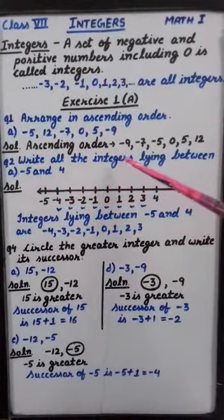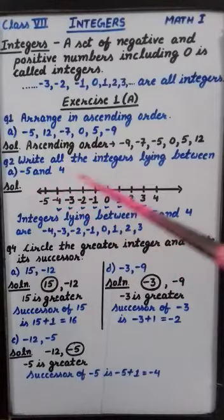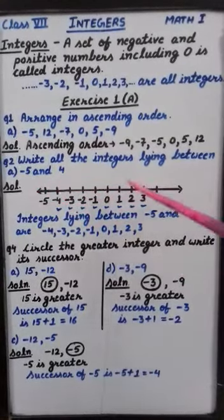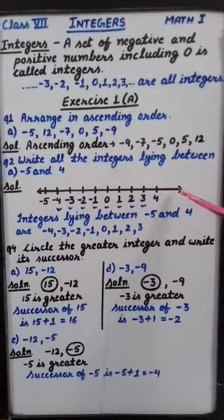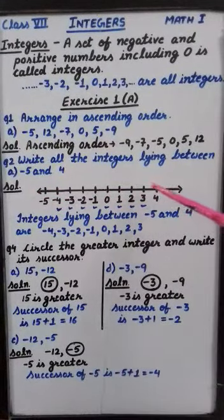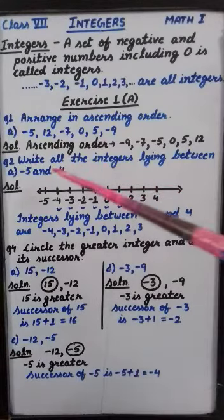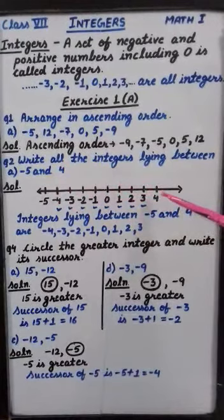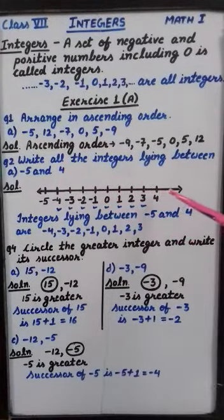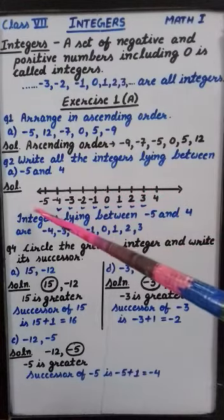Write all the integers lying between minus 5 and 4. So between minus 5 and 4, I have drawn a number line here. Number line whenever you are drawing, please draw by using scale and pencil. And one more thing that all these numbers, they should be at equal distances. Now 0 is there in the middle. Positive numbers, they are on the right side. Negative numbers,